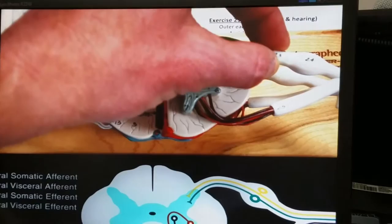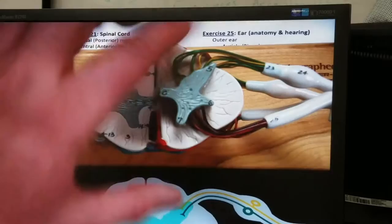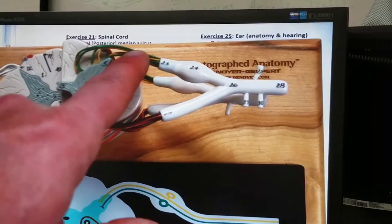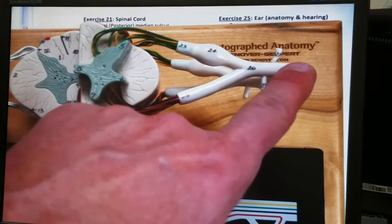There are ventral rootlets here. Ventral root, where they merge out here at 26 to 28, this is a nerve. So this is mixed, this is motor, this is sensory. Dorsal root is sensory, ventral root is motor. When they merge, you have mixed because you've got both functions.